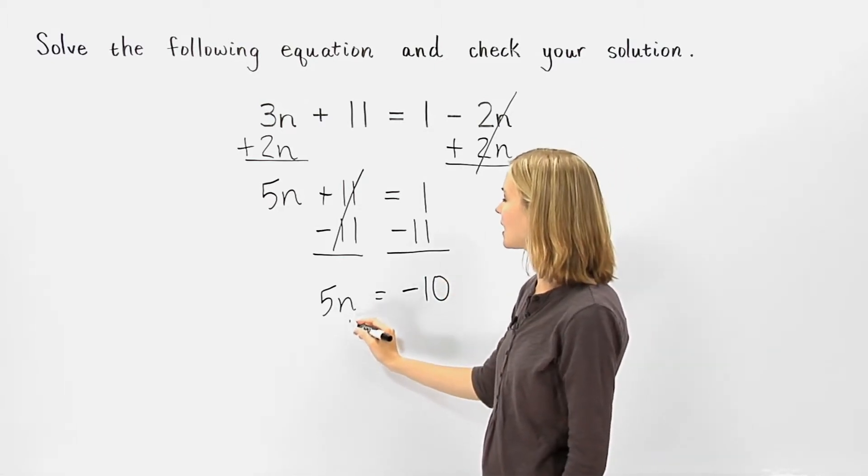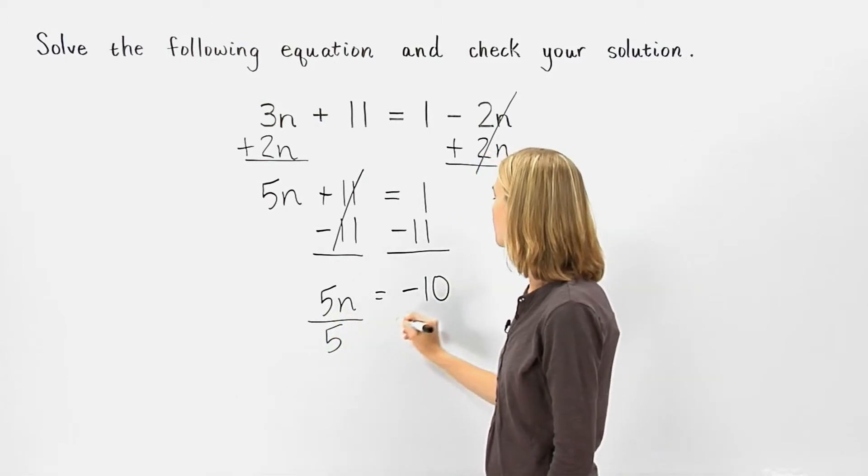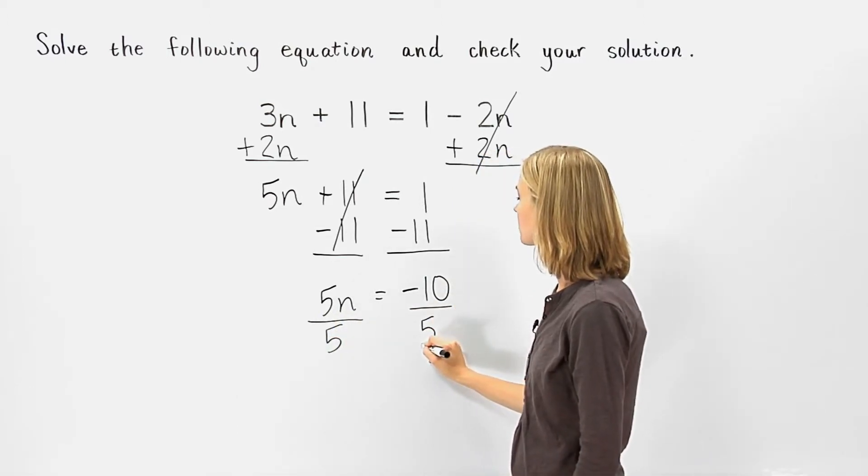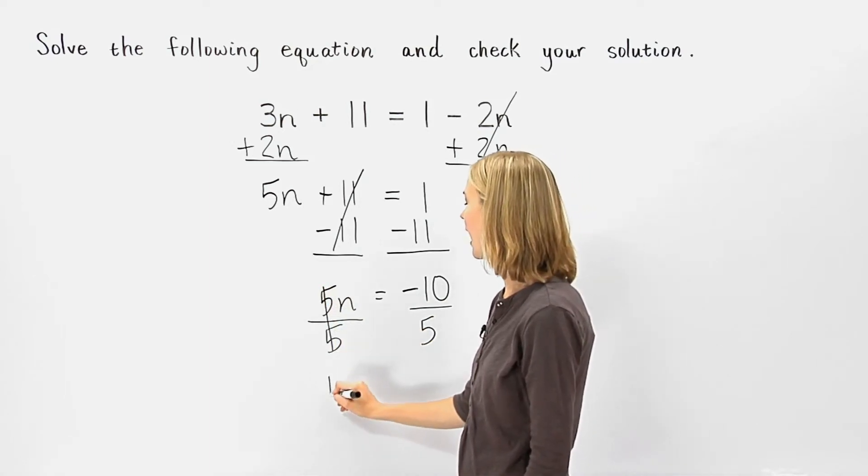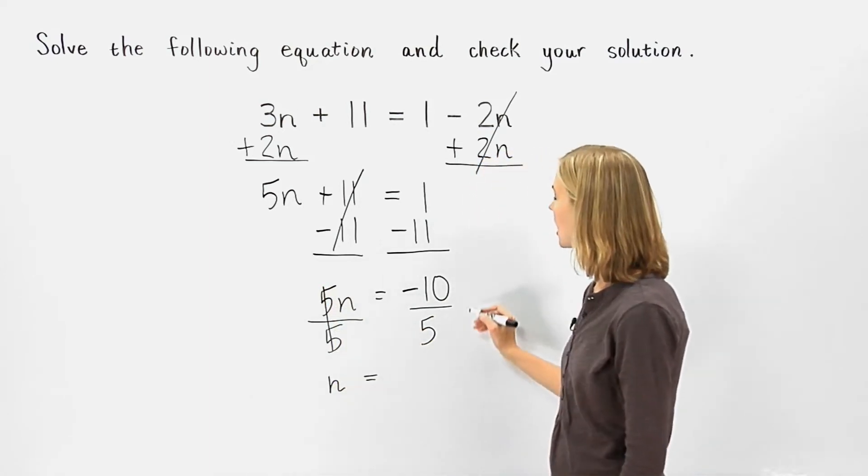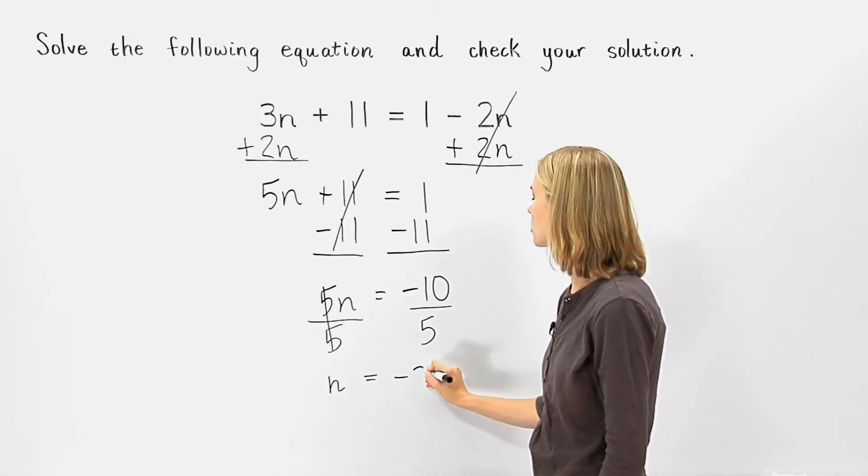Now, since n is being multiplied by 5, we need to divide by 5 on both sides of the equation. On the left side of the equation, the 5's cancel each other out and we have n. And on the right side of the equation, negative 10 divided by positive 5 is negative 2.